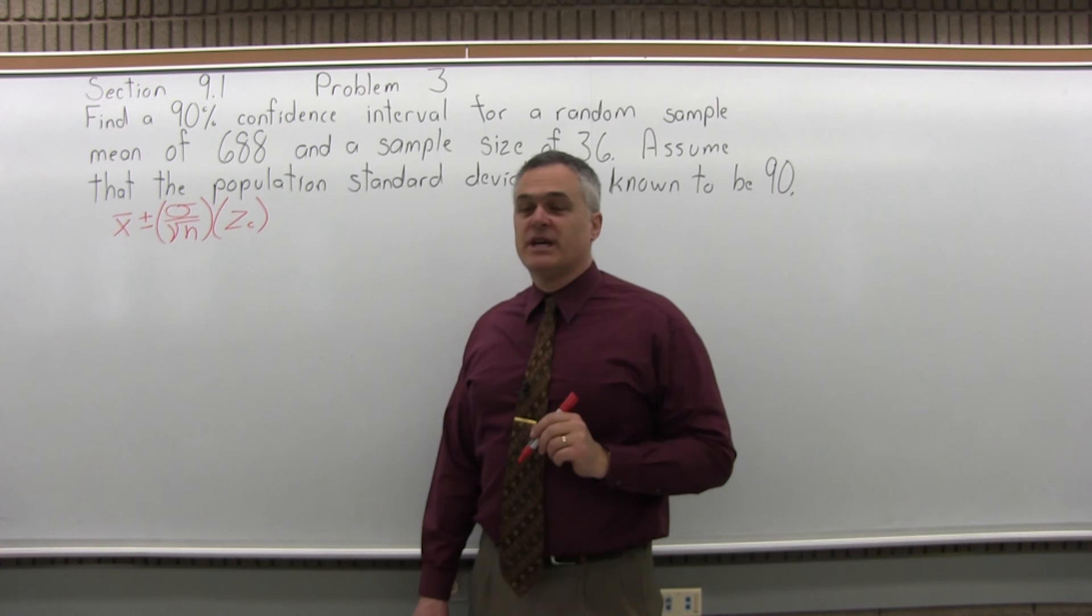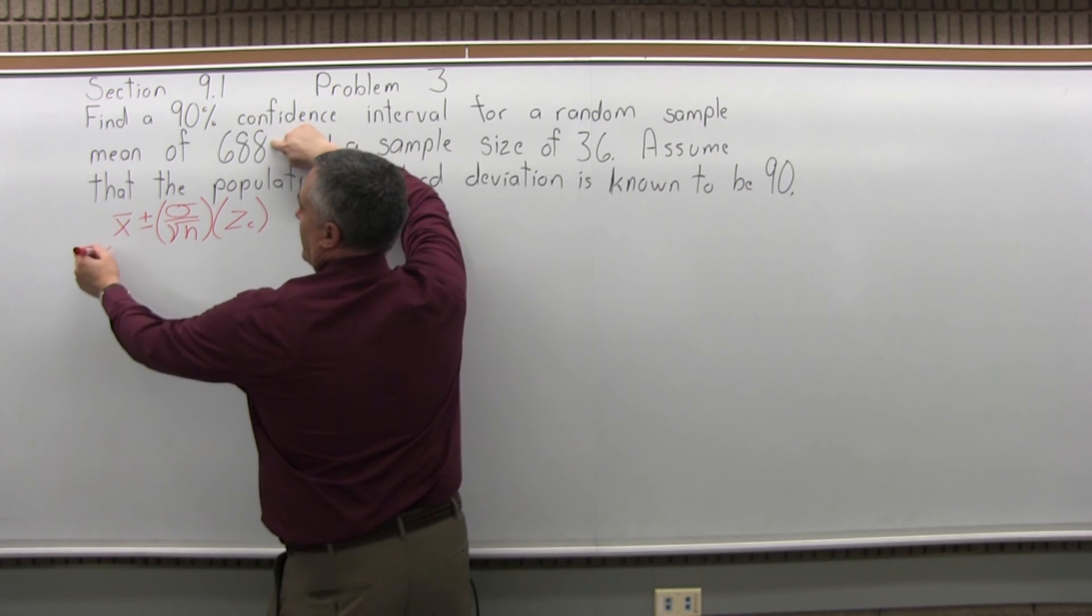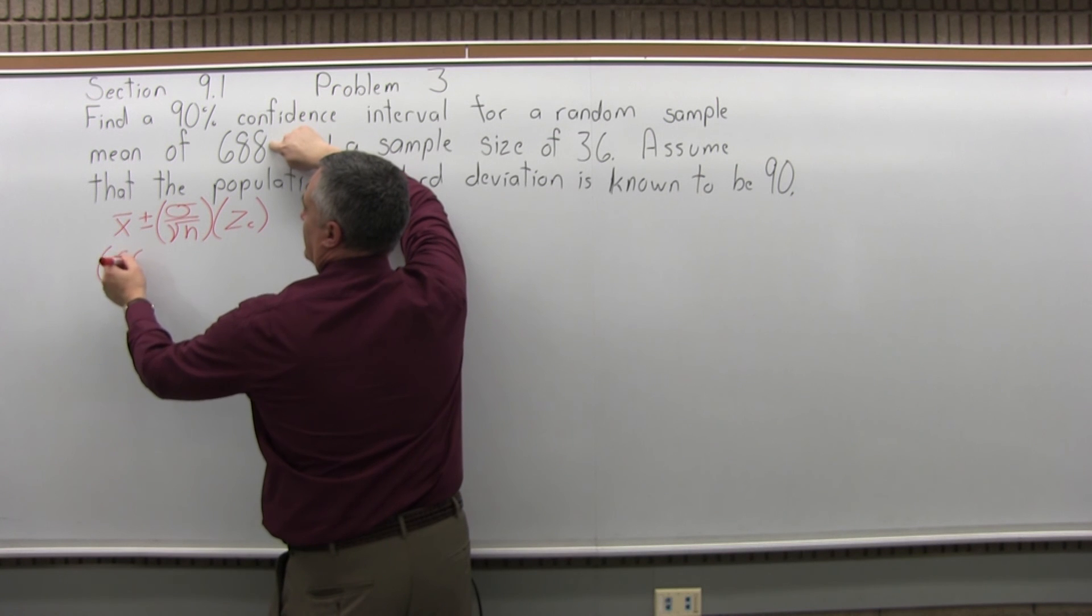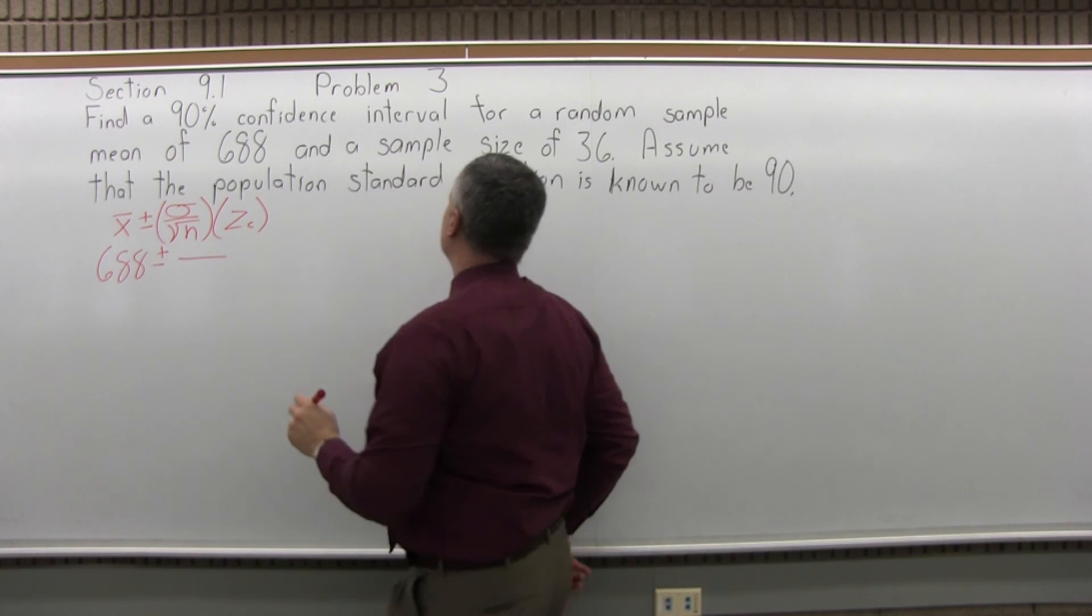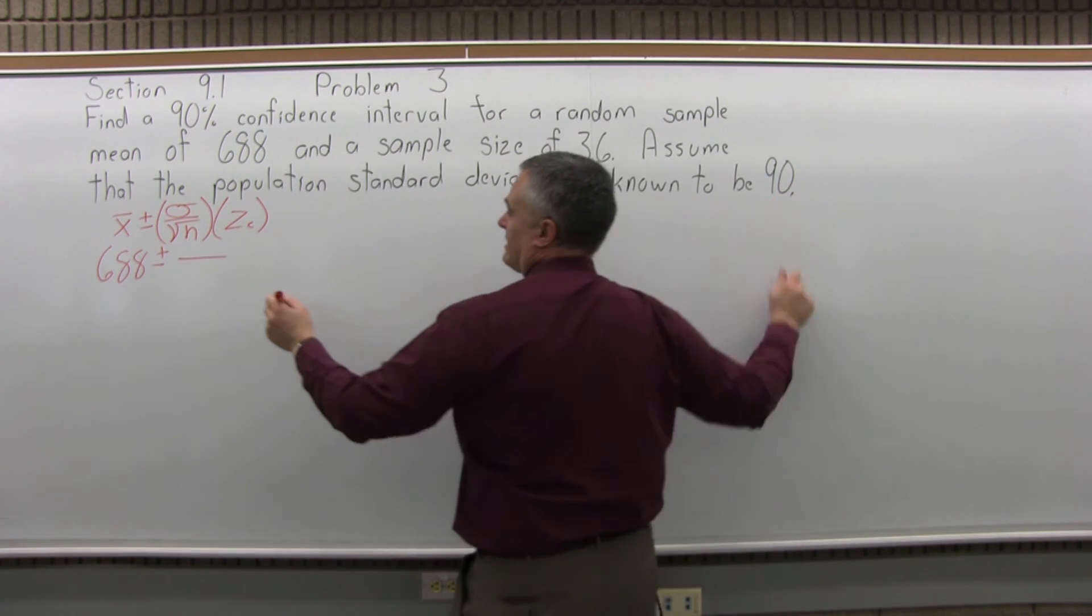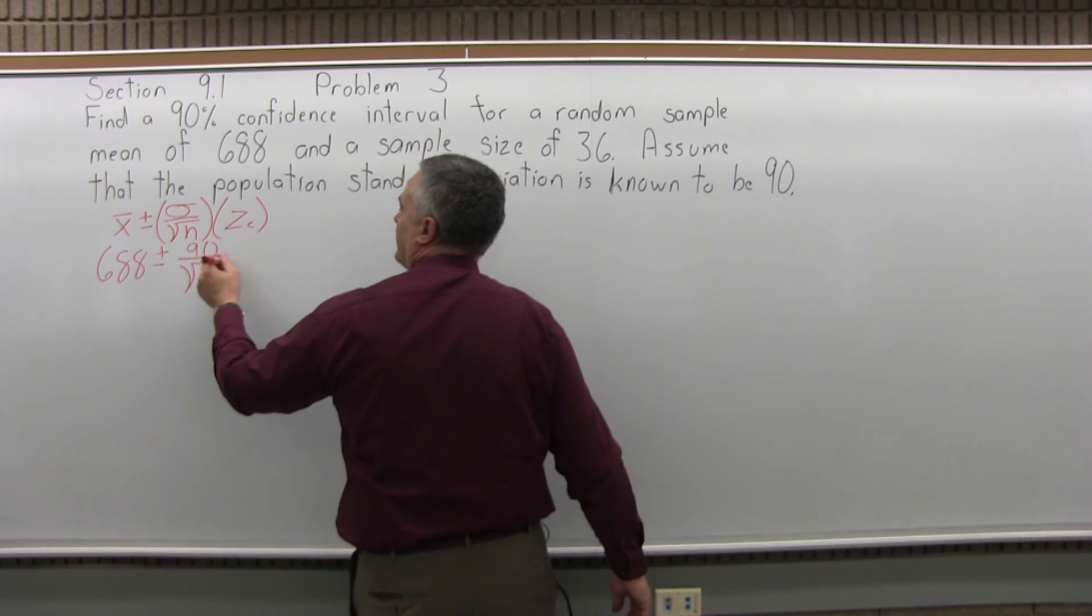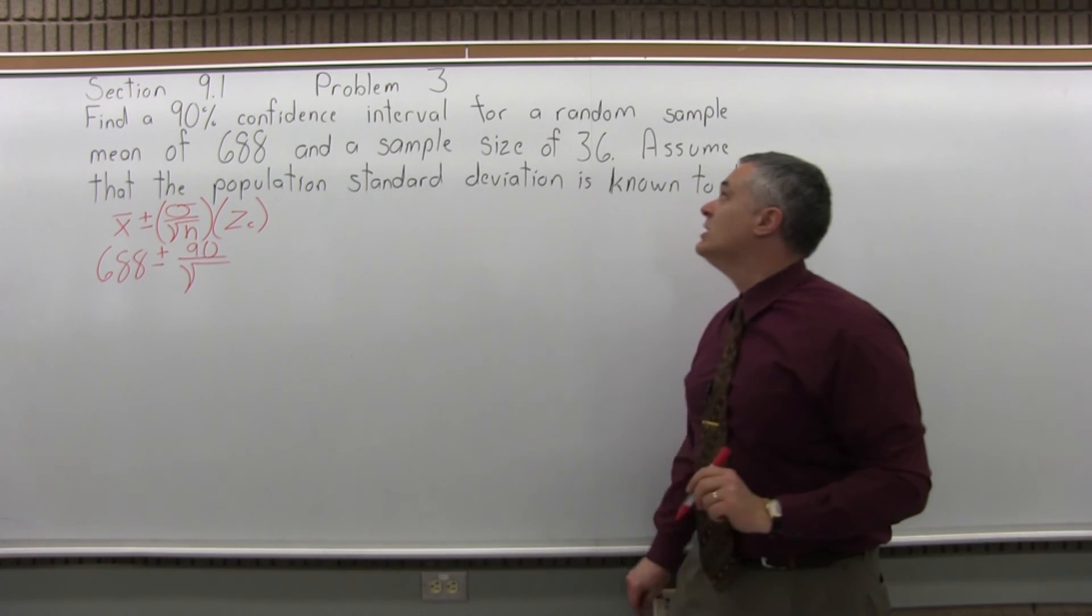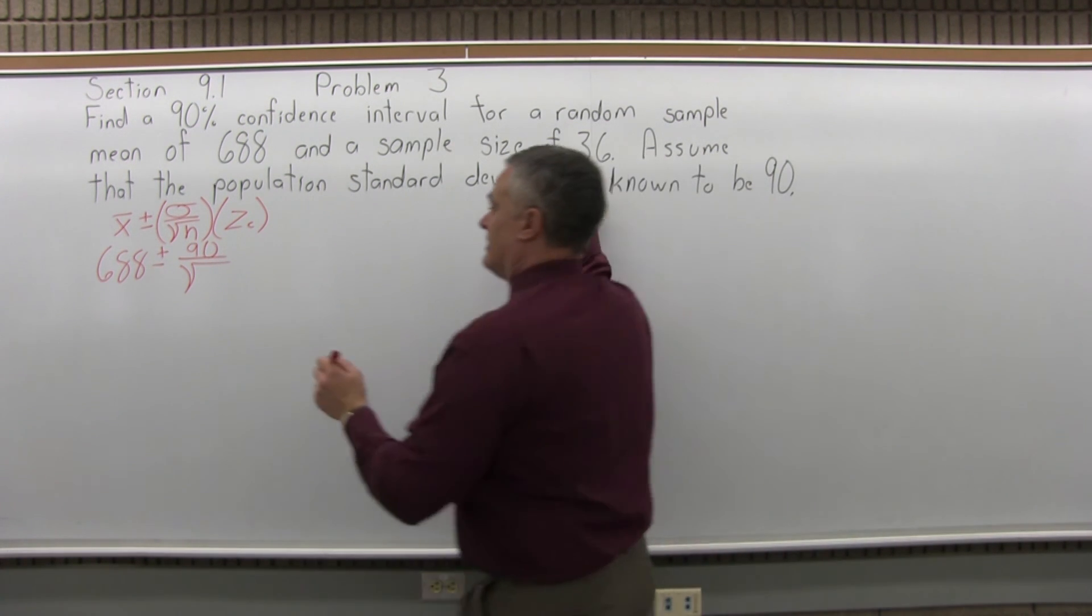So to fill that in, the x bar is the sample mean, which is given as 688. Plus or minus sigma, the standard deviation, and at the end it says the population standard deviation is known to be 90, over square root of n. N is the size of the sample, so this is a sample of size 36, so that's n.